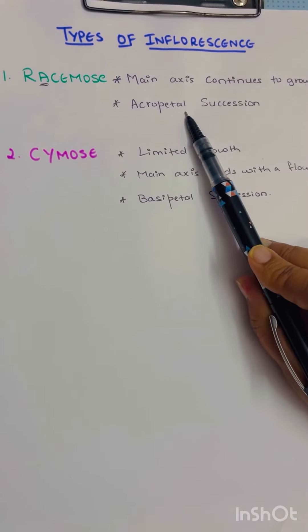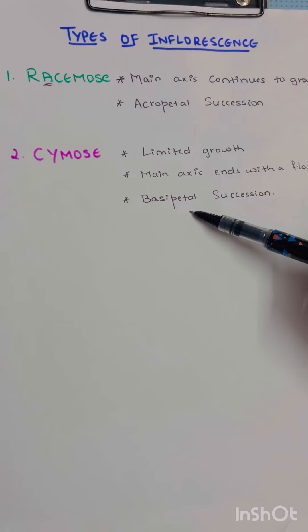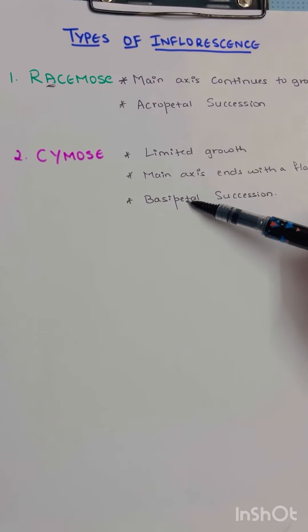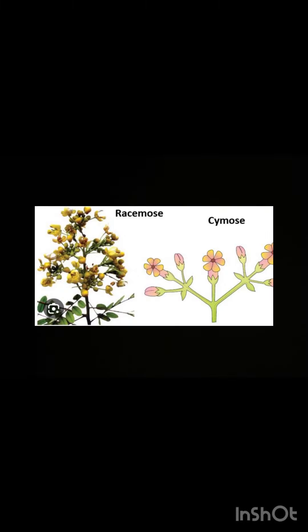And opposite of this is cymose inflorescence. That is racemose and cymose. So you can see the images of racemose and cymose inflorescence.